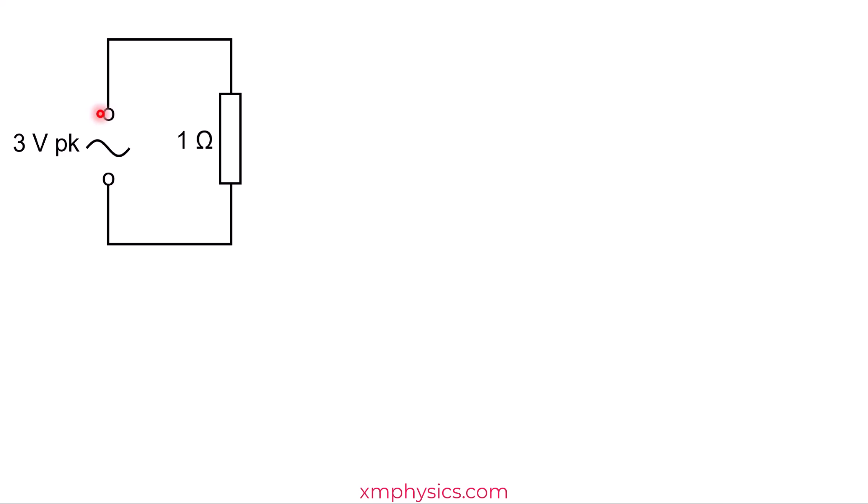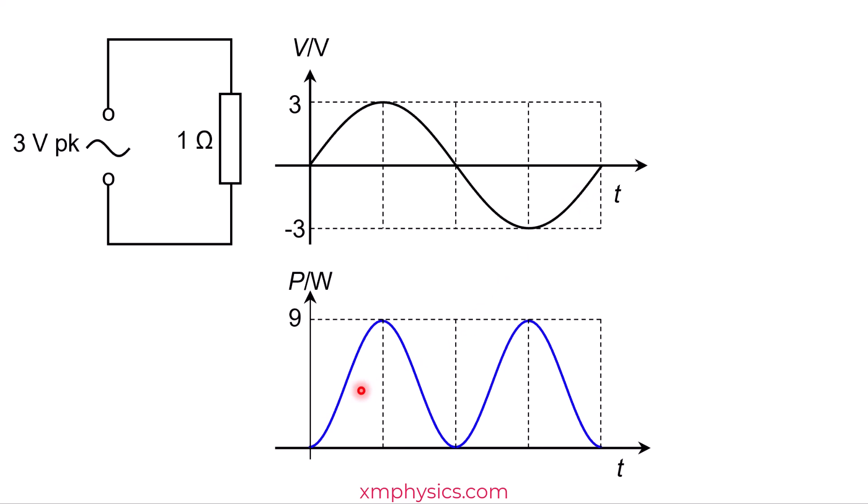Now, what if we connect it across an AC power supply with a peak voltage of 3 volts? So the voltage across the resistor will not be constant. It will be varying sinusoidally with time. And because of that, the power will also not be constant. It will also be varying sinusoidally between the value of 0 watts and 9 watts.